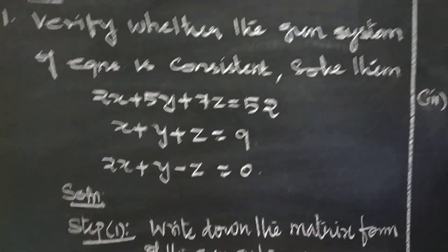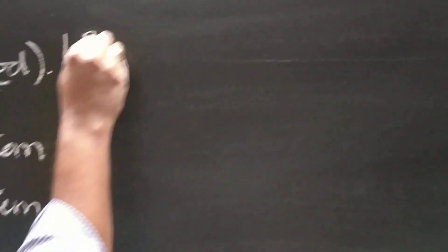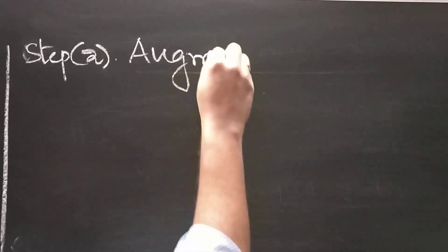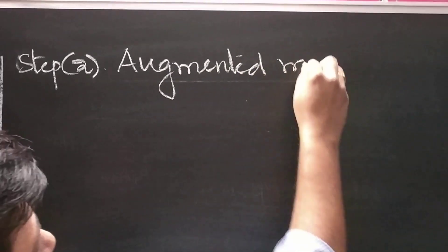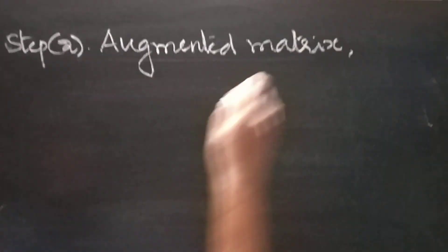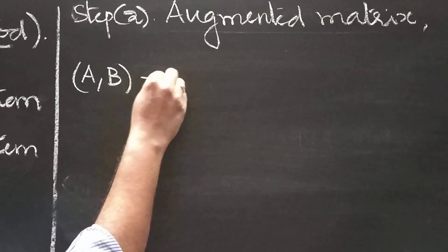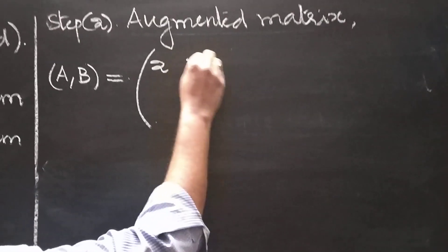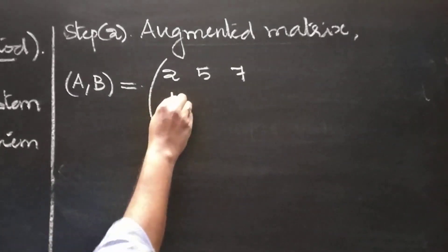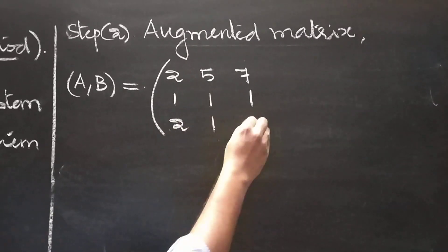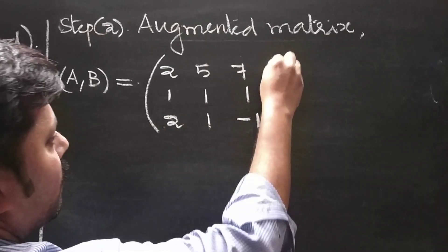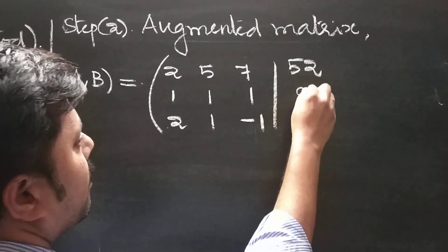Step 2: write down the augmented matrix [A, B]. Matrix A is: row 1: 2, 5, 7; row 2: 1, 1, 1; row 3: 2, 1, −1. B is the right-hand side of the given equations: 52, 9, 0. So the augmented matrix [A | B] combines these.